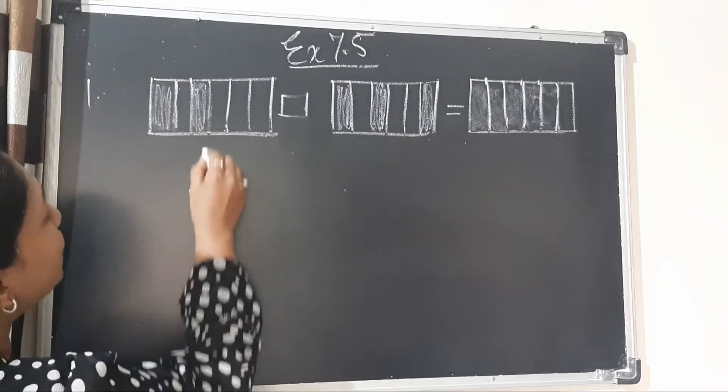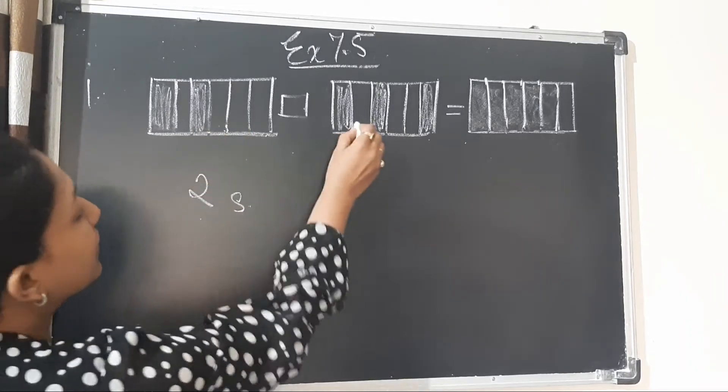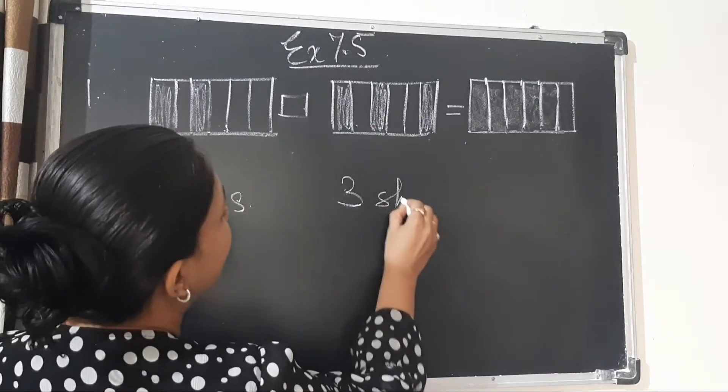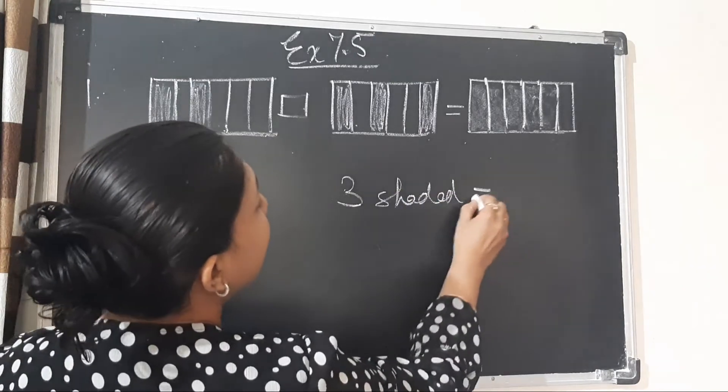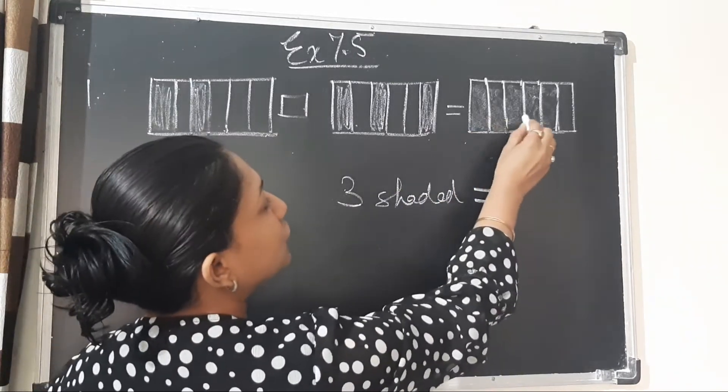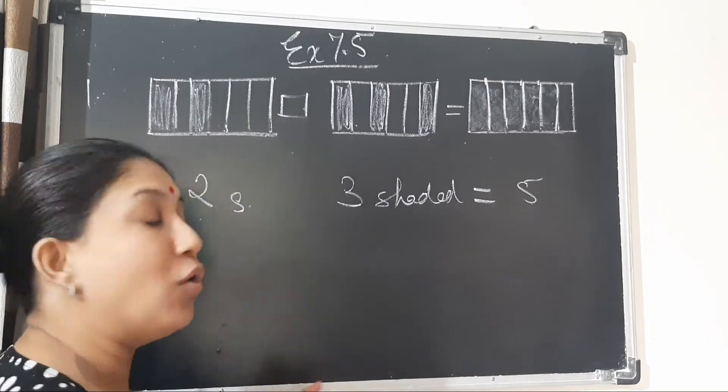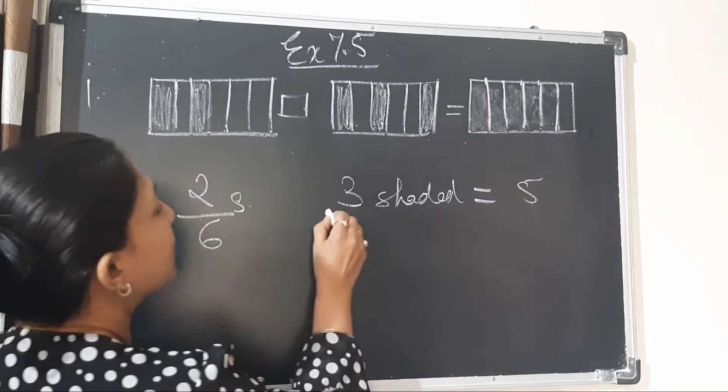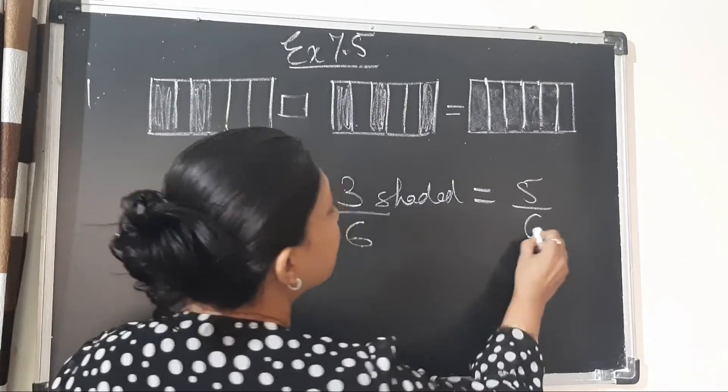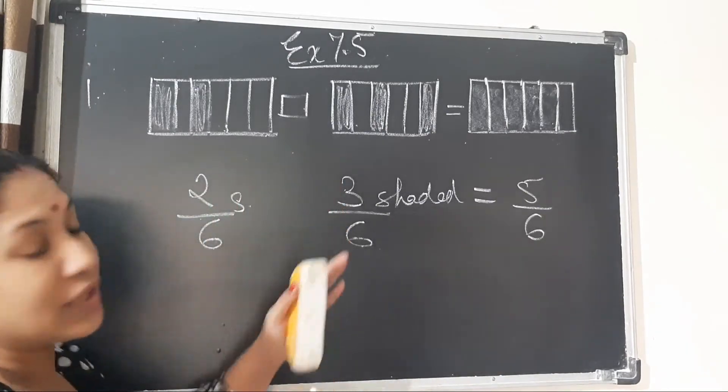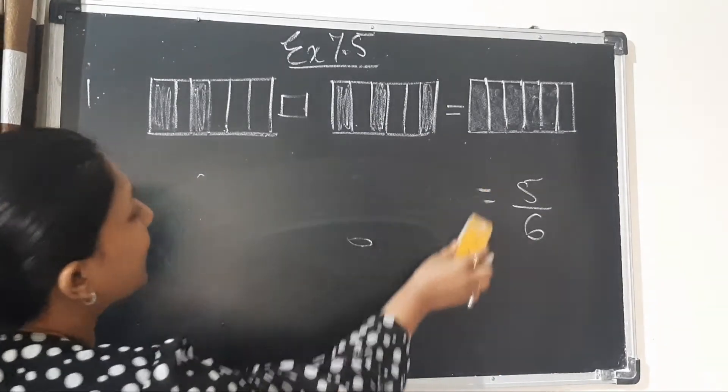See here 2 portions are shaded, here 3 portions are shaded, and here 1, 2, 3, 4, 5 portions are shaded in total. On 6, on 6, and on 6. So what do you see children here? What can you say?